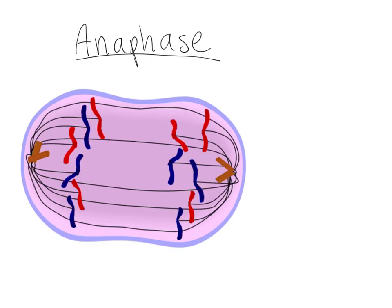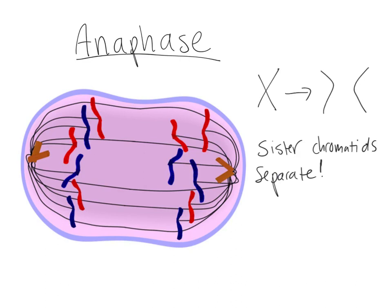Next on our journey, we have anaphase. Anaphase is where the X gets pulled apart into two separate chromosomes. So the sister chromatids separate here in anaphase and start heading towards the poles — either side of the cell. It's important that the sister chromatids separate because it gives each side, or each new cell, one of every chromosome. Before, each X represented one chromosome that had copied itself and stuck together, so there were actually two chromosomes in that X. Now they're separate: one goes to each cell, and everybody's happy.